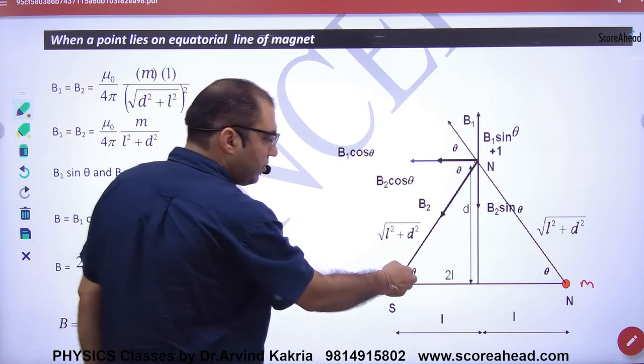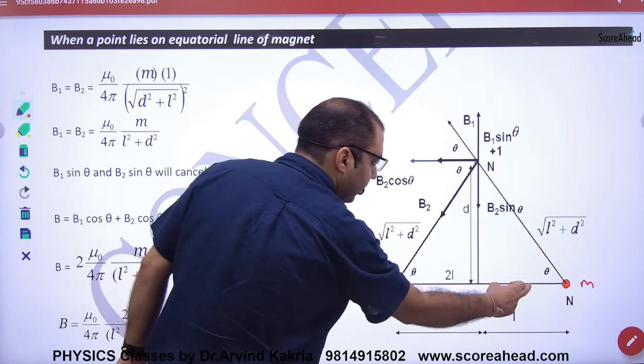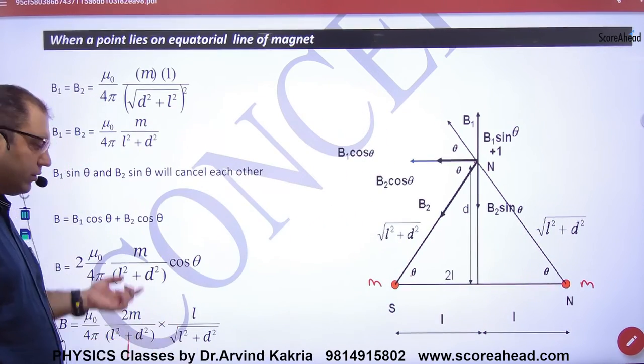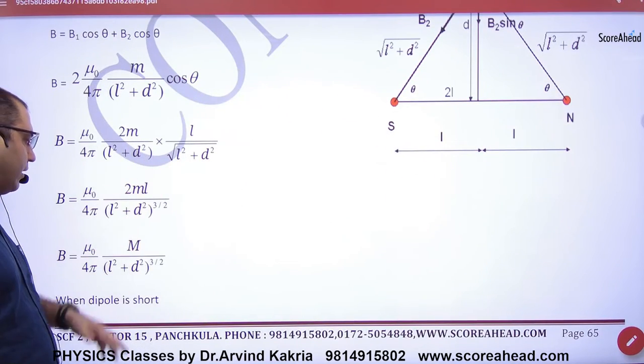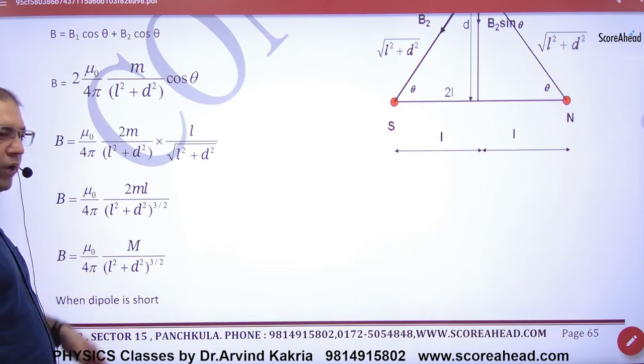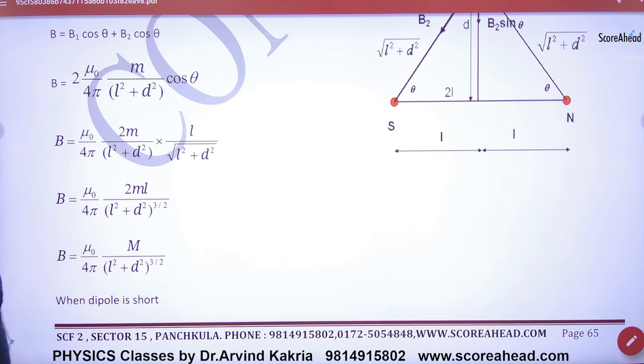Now what will be cos theta? From this triangle, L upon under root of L-square plus d-square. So if you multiply them, the value will be raised to power 3 by 2. And m into 2L is capital M. So this is the value of B on the equatorial line.